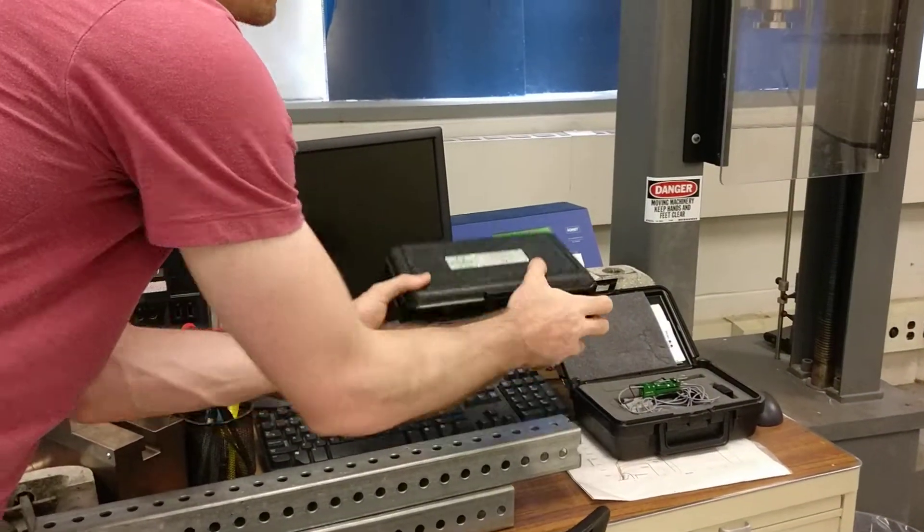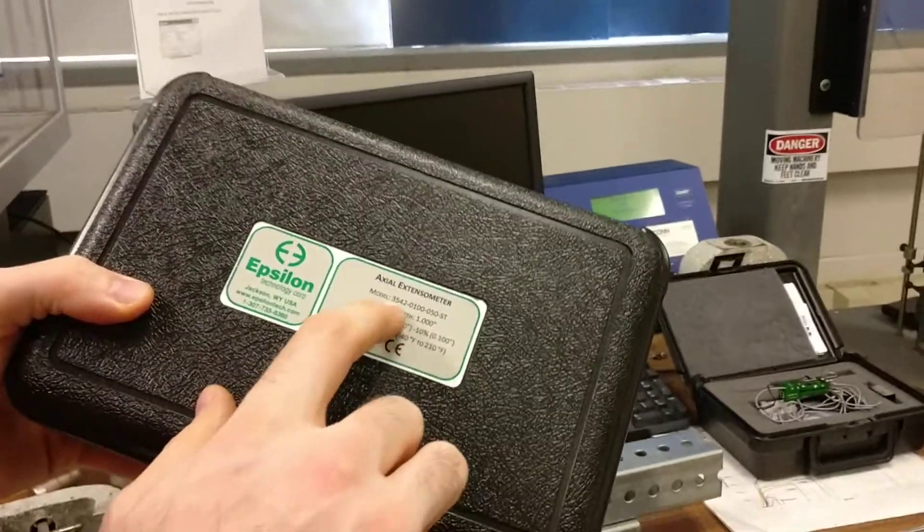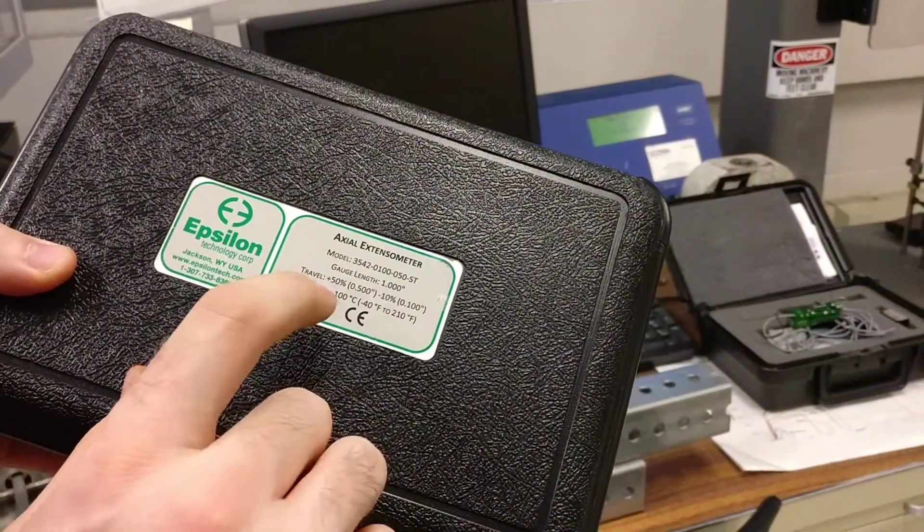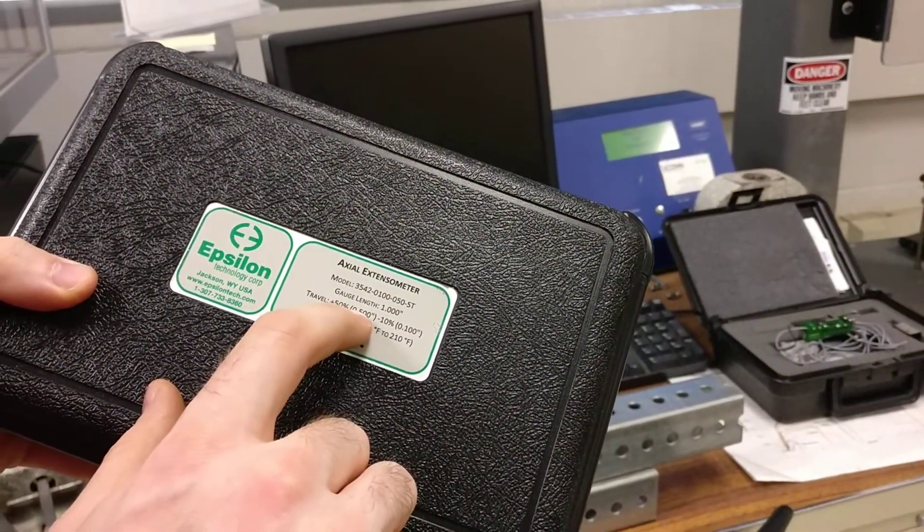On the covers of these, you will see the model number, which will have gauge length. The travel distance is half an inch.